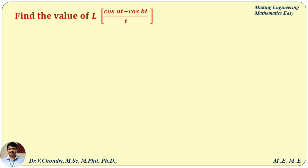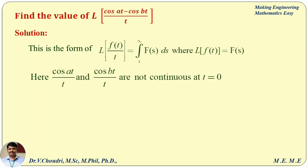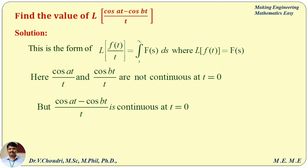Although we proved that L of cos(at)/t does not exist, how do we find the value of L of (cos(at) − cos(bt))/t? Individually, cos(at)/t and cos(bt)/t are not continuous at t = 0. However, (cos(at) − cos(bt))/t is continuous at t = 0. Therefore the Laplace transformation of (cos(at) − cos(bt))/t exists.